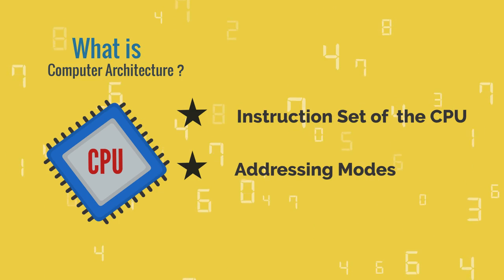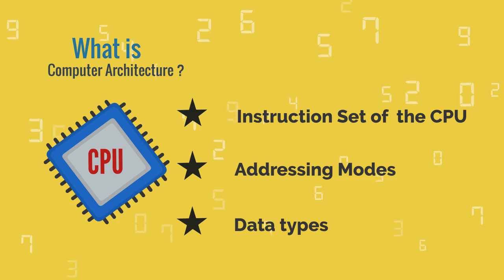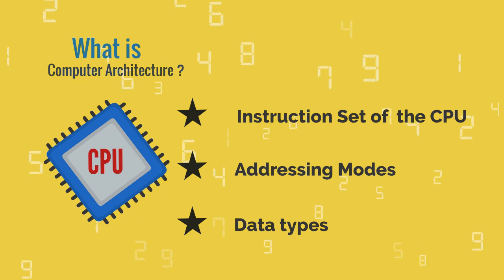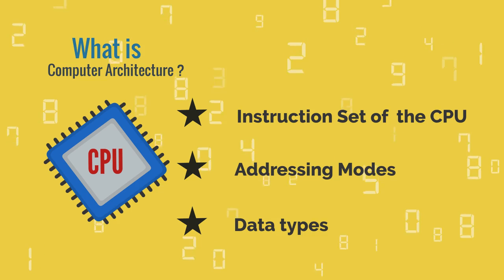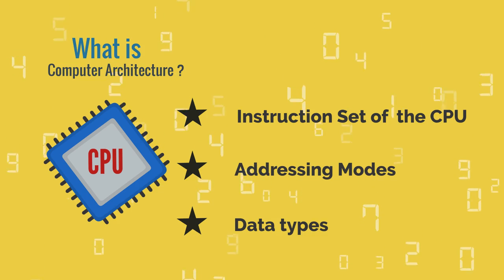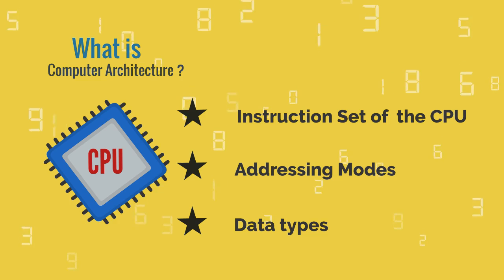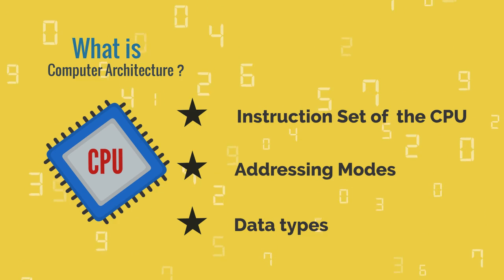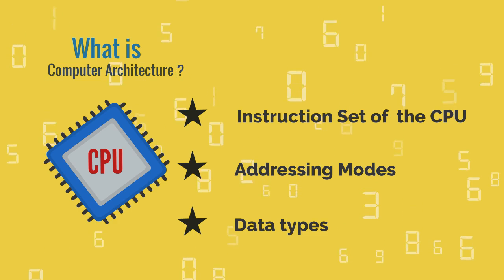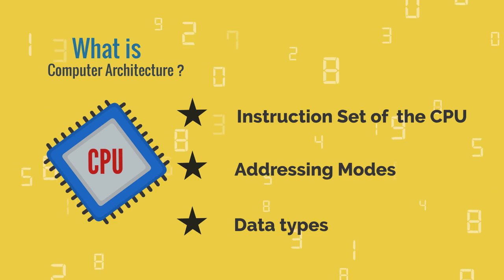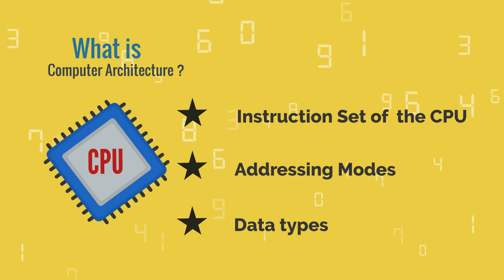Computer architecture also includes data types. All these parts make up the logic of the computer system. Computer architecture acts like an interface between hardware and software. A programmer can view architecture in terms of instructions, addressing modes, and registers. While designing a computer system, architecture is considered first.